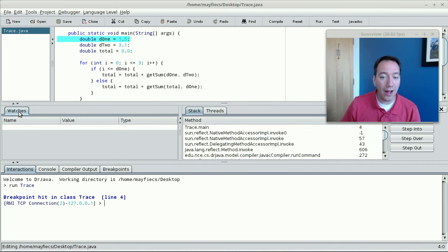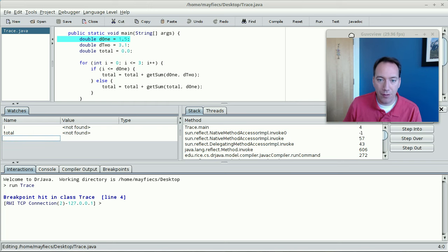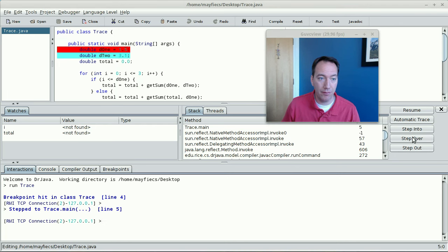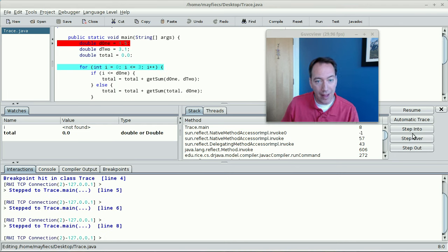So over here under watches, you can create variables that you want to watch. So for example, I want to watch the variable i. It's not found because I haven't yet declared it. And I also want to watch the variable total. Right? So now what's kind of nice, let me move my video over here, is I can go ahead and step through this code one line at a time. So I can hit step over, step over, step over. So now that total has actually, this line of code is executed, you can see that that value is zero.